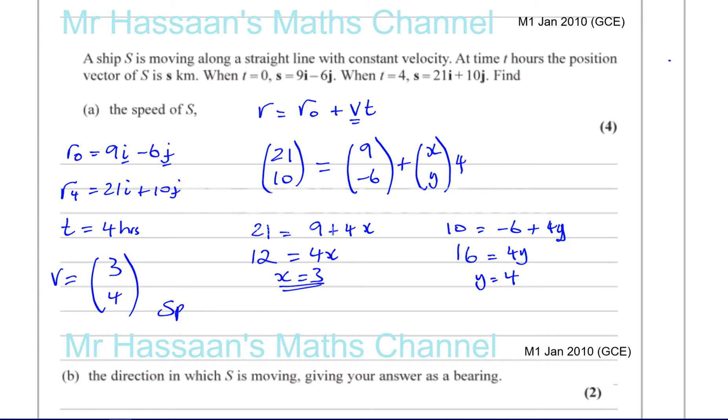Now they ask us for the speed. The speed is not the same as the velocity. The speed is the magnitude of the velocity, which is the magnitude of this vector. The magnitude of this vector - if you think about it, 3, 4 - you're going to go 3 across to the right and 4 up. The magnitude will be the hypotenuse of this right angle triangle, 3-4-5 triangle. So the speed is 5, in kilometers per hour, because this distance is in kilometers and the time is in hours.